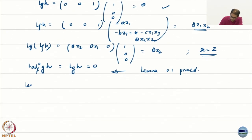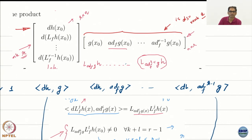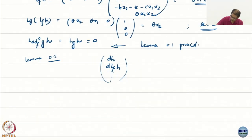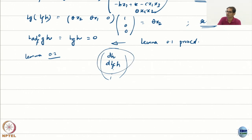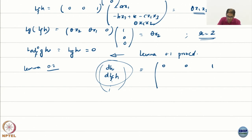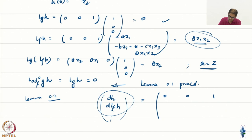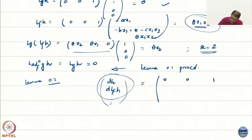What was lemma 0.2, it was the linear independence of dh, dlfh and so on and so forth. In this case, how far do I have to go, only till r minus 1, so what is r minus 1 in our case, 1, so I just have to go till lfh. So I just have to compute this much, dh and dlfh. What is dh, we have already done this, it is 0, 0, 1. What is d lfh? dh is correct, lfh is this guy, what is the d of that, you have already computed that also. Theta x 2, theta x 1, 0.